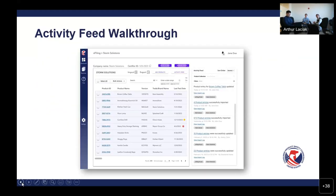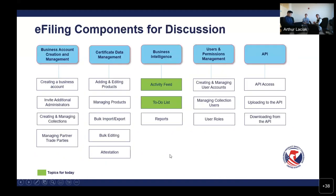Let me go back to the components slide for discussion. We've covered a lot of this, but we still have to address some other things — under business intelligence we have to cover reports; under certificate data management we just have to cover attestation; we still have to cover managing trade partner parties; and then API as well. Those are the final ones. Today was a light topic because we are still developing content for the rest and resolving some questions internally before we present it all to you. But in two weeks' time, we'll be able to cover some of these other topics.